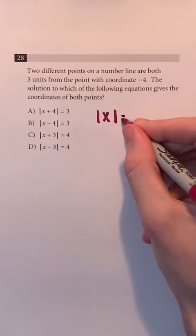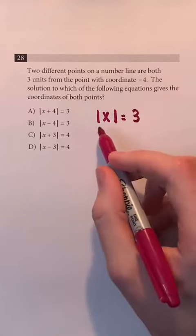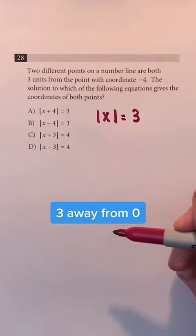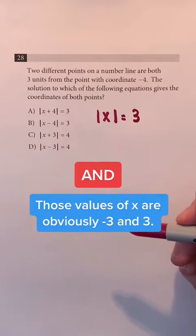Now, let's set the absolute value of x equal to 3. This equation will tell us values of x that are 3 away from zero, and those values of x are obviously negative 3 and 3.